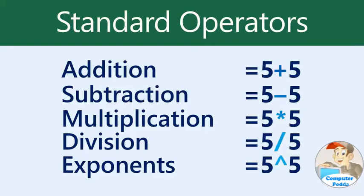You're probably used to seeing equations like 5 plus 5 equals, but in Excel the equal sign comes first. That's because the cell itself contains, or is equal to, the formula and its value.